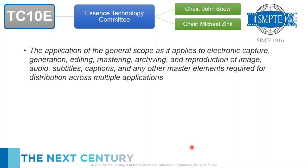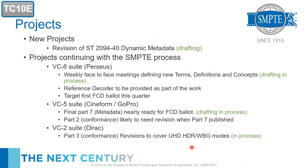TC10E is about essence — compression. A new project from three months ago is the VC-6 suite, commonly known as the Perseus compression system. This is quite a novel compression system with many new terms, definitions, and concepts. A core team attends weekly drafting sessions to figure out the best way to explain this new scheme. If you're familiar with MPEG, JPEG, VC-2, or Dirac, VC-6 is absolutely nothing like them — it's completely different and truly novel.